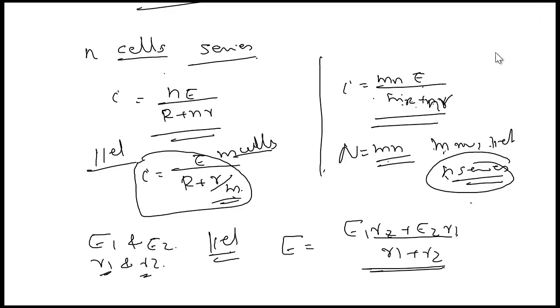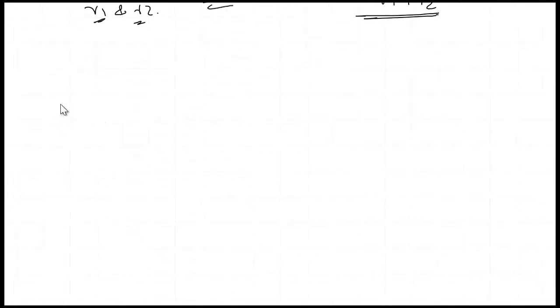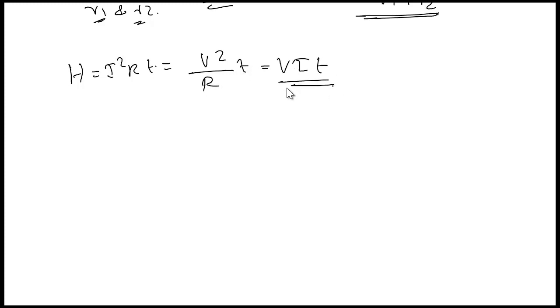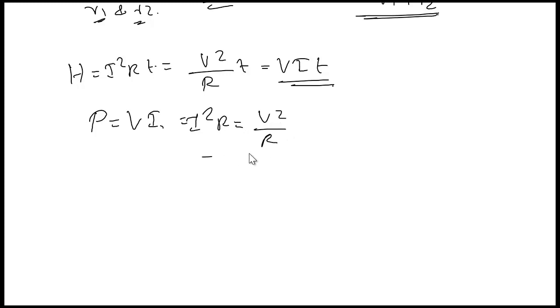Next, we consider Joule's law of heating. H = I²Rt. We can also write it as V²/R × t or V×I×t. Power P = VI = I²R = V²/R. Power unit is watt and energy unit is joule. This is about electric power.